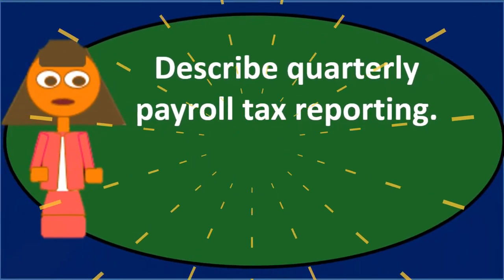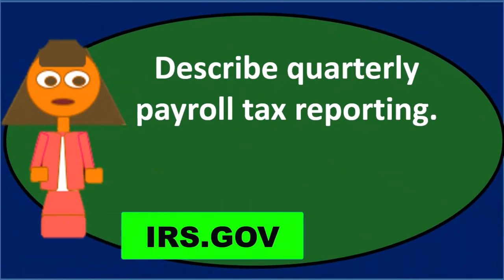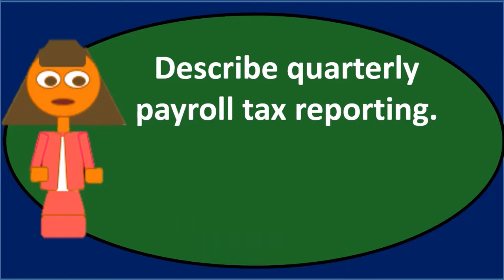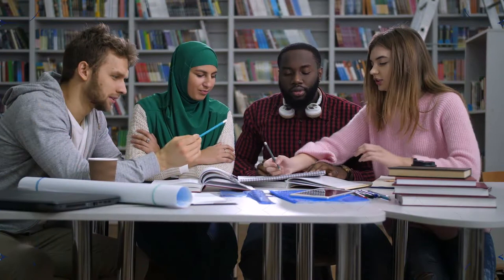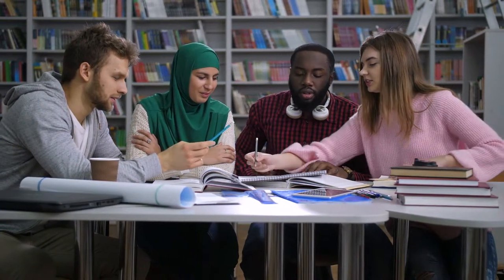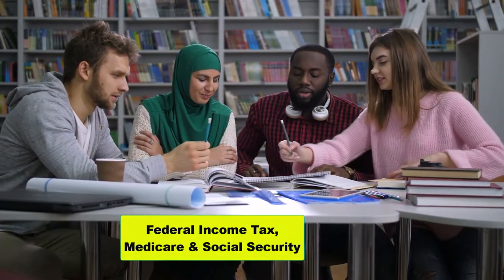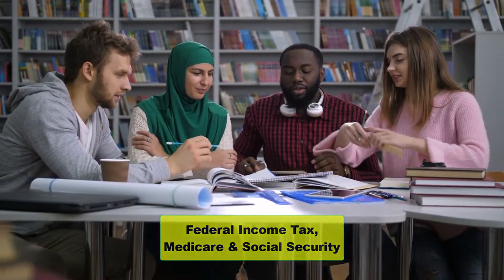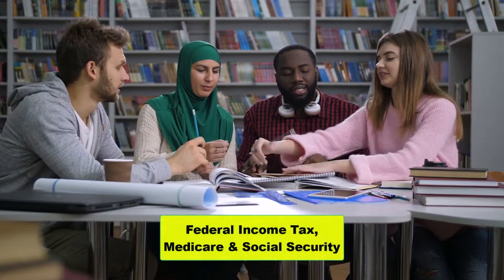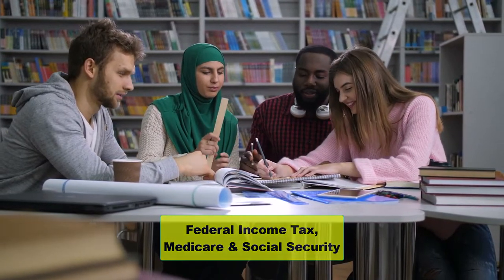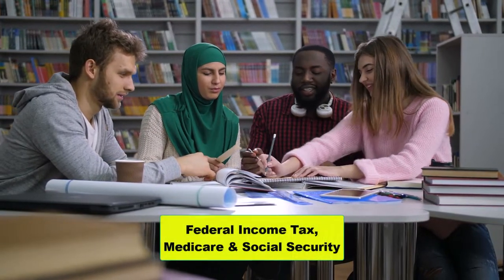The forms can be found on the IRS website at irs.gov. There are three main taxes reported on a quarterly basis: federal income tax, Medicare, and Social Security.